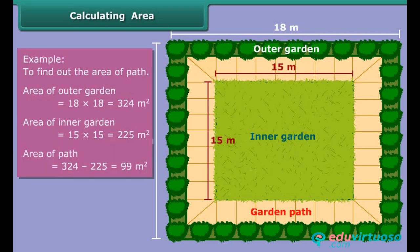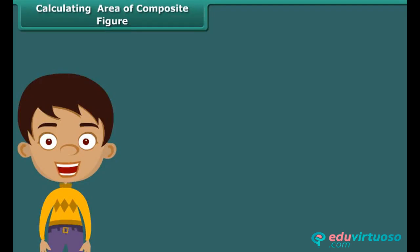So, the area of the path will be 324 meters square minus 225 meters square, which is equal to 99 meters square. Now that we have had enough practice, let us calculate the area of a shape that is made up of multiple rectangles.